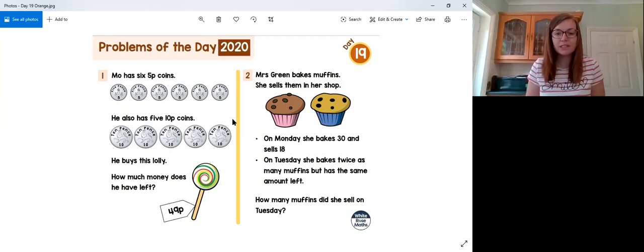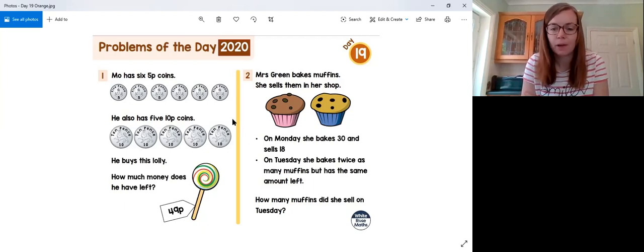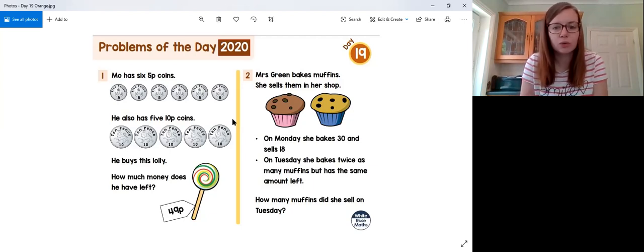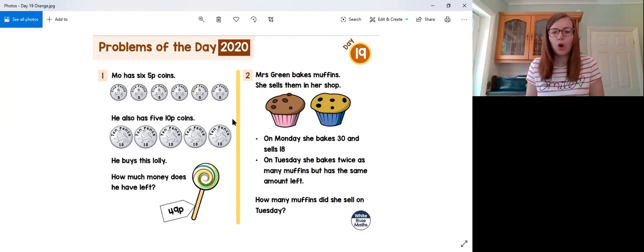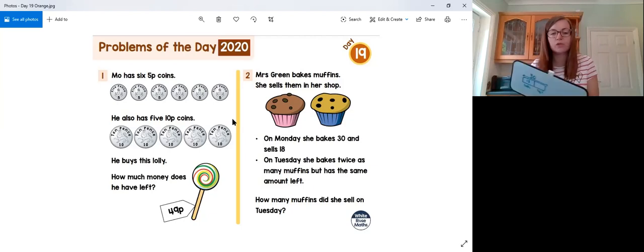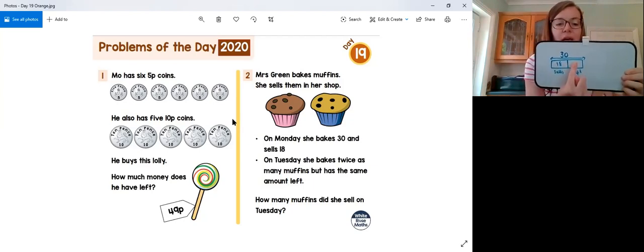Okay, let's move on to question two. Mrs. Green bakes muffins and she sells them in her shop. On Monday, she bakes 30 muffins and sells 18 of them. On Tuesday, she bakes twice as many as she did on Monday, but she has the same amount left at the end of the day. So how many did she sell on Tuesday? So let's have a look here then. So on Monday, she bakes 30 and then she sells 18. So how many does she have left?